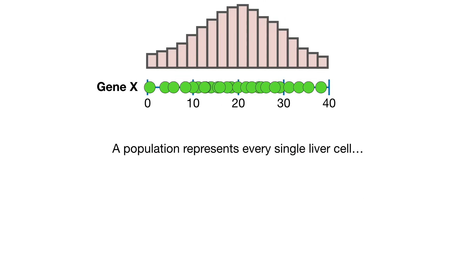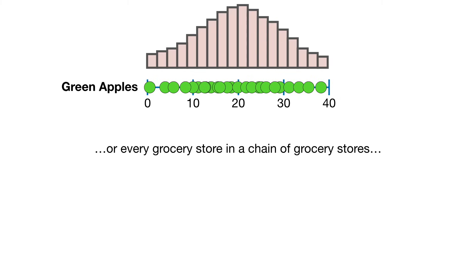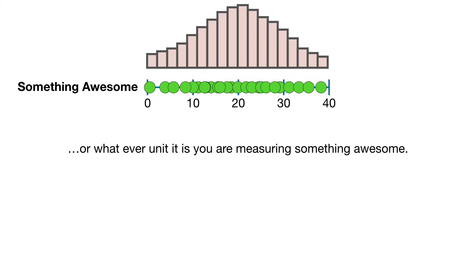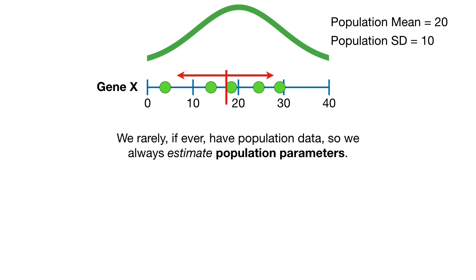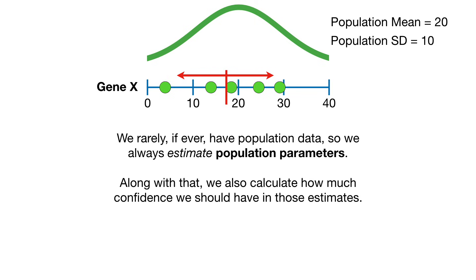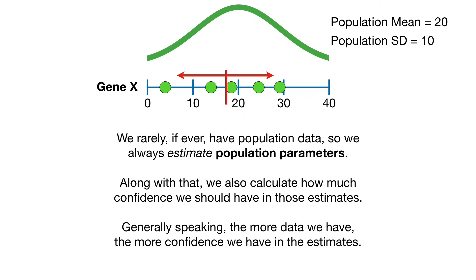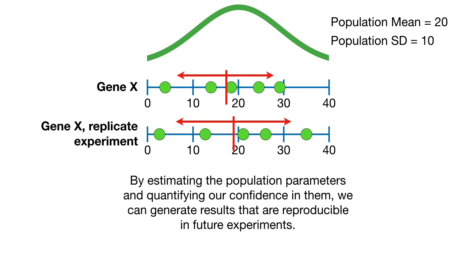In summary, a population represents every single liver cell, or every grocery store in a chain of grocery stores, or whatever unit it is you are measuring. The parameters that determine how a distribution fits the population data are called population parameters. We rarely, if ever, have population data, so we always estimate population parameters. Along with that, we also calculate how much confidence we should have in those estimates. Generally speaking, the more data we have, the more confidence we have in the estimates. By estimating the population parameters and quantifying our confidence in them, we can generate results that are reproducible in future experiments.